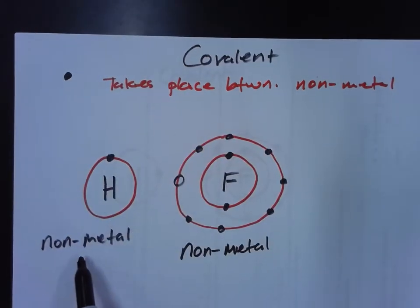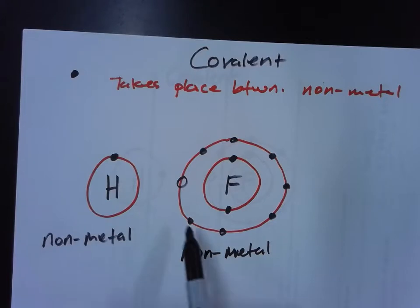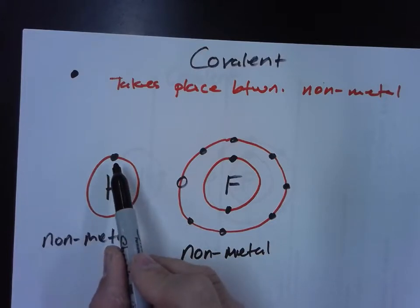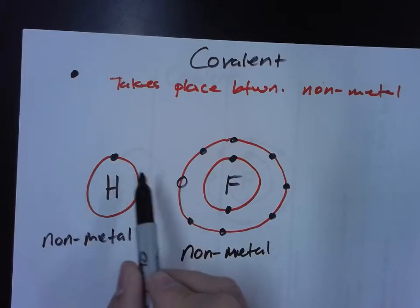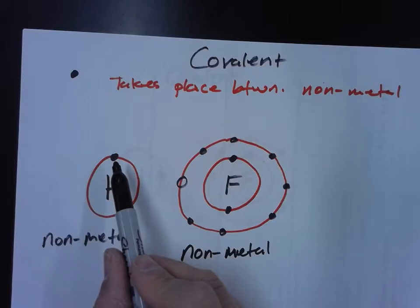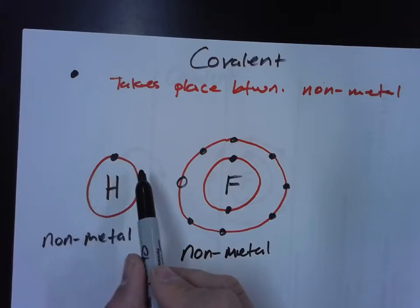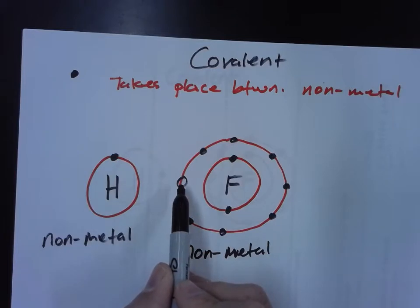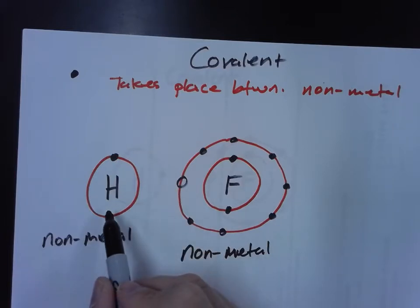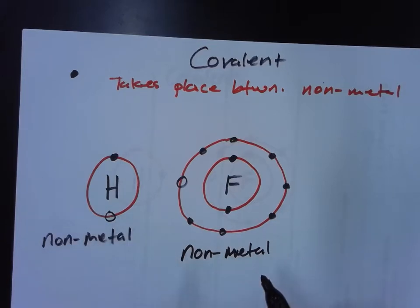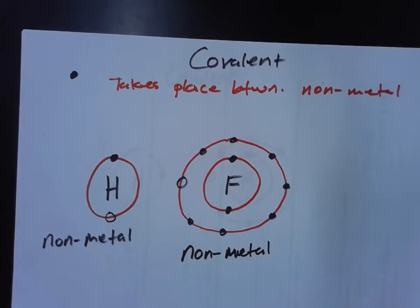So in this case, we've got non-metal hydrogen, non-metal fluorine. Again, look here. It's almost like a piece of a puzzle fitting together. Because hydrogen has one electron, and fluorine has an open space. Now, there's also another open space here between hydrogen, actually. So what will happen is this.